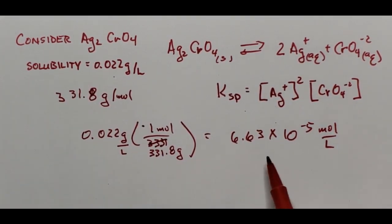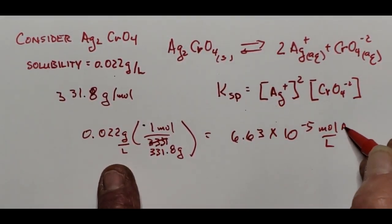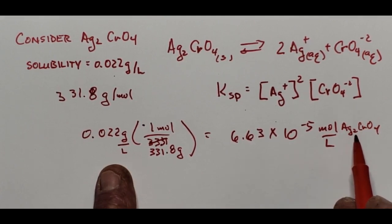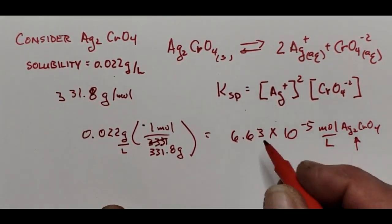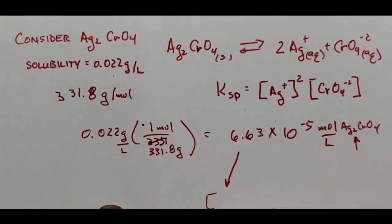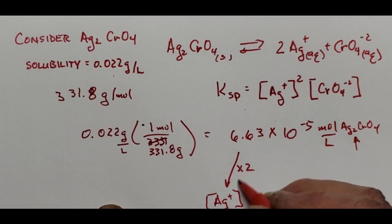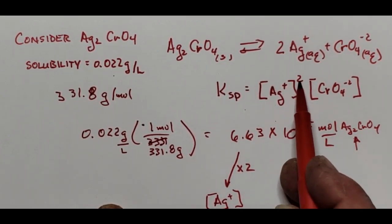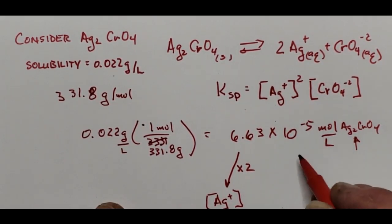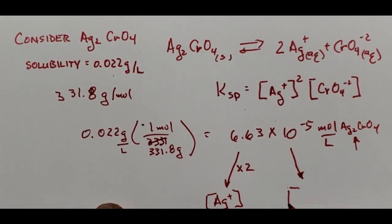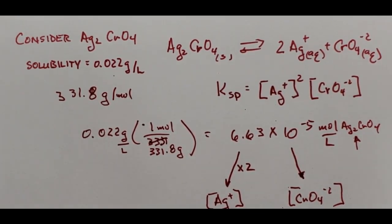When that many moles of silver chromate dissolve, it creates twice this many moles per liter of silver, because of the two in the formula for silver chromate. So the concentration of silver is 2 × 6.63 × 10⁻⁵. Since there's only one chromate in each molecule, you get exactly that same number of moles per liter of chromate ion.